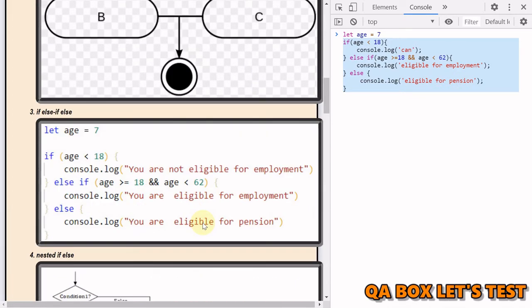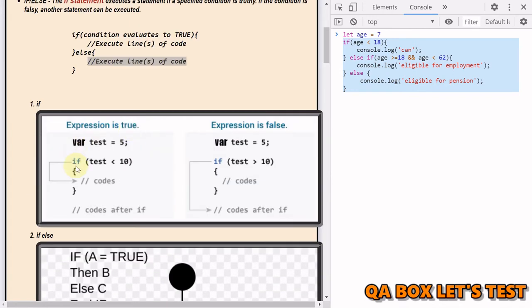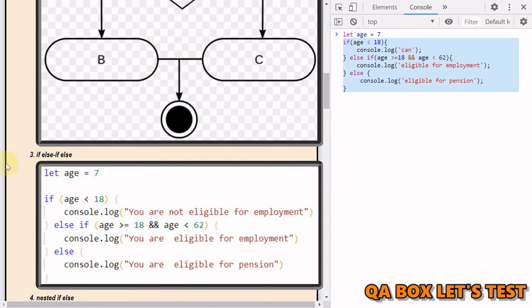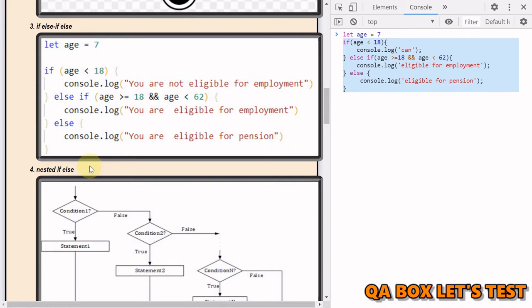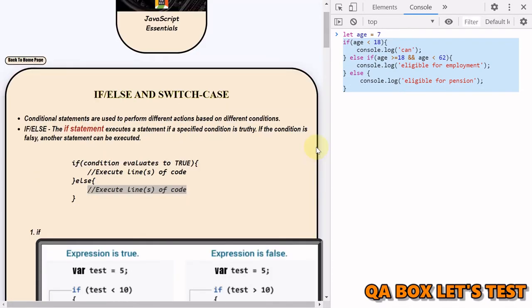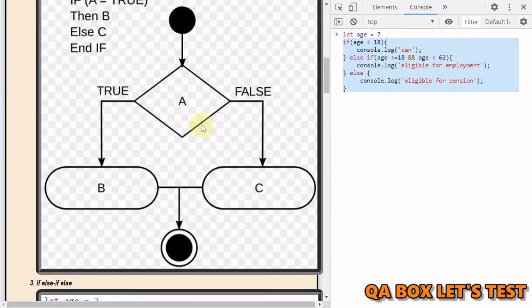So then we also have different levels of if-else. You can write a simple if, you can write if-else, you can write if else-if else, and you can also write nested if-else. I'm going to cover if else-if else, and that will cover all of these.